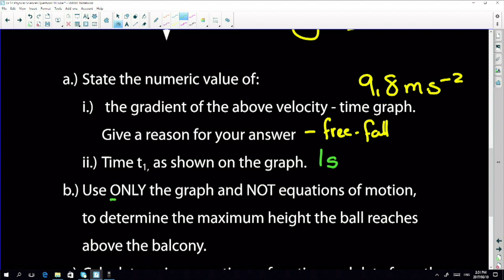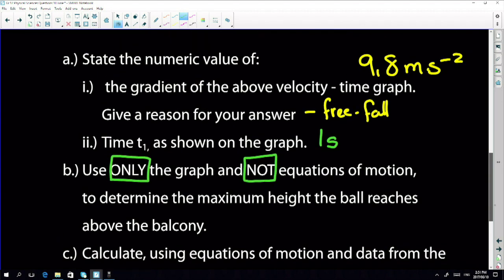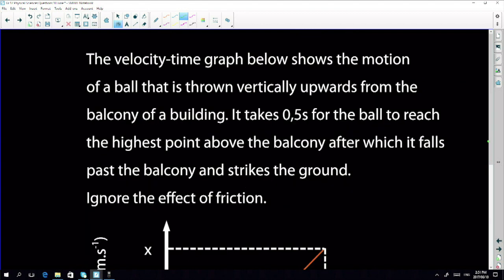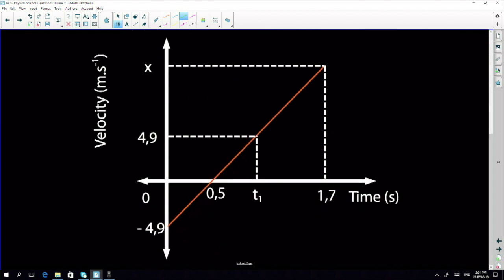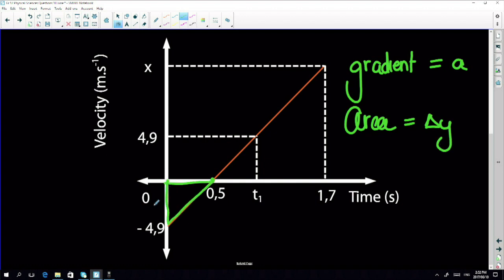Use only the graph and not equations of motion to determine the maximum height the ball reaches above the balcony. I cannot use equations of motion. Brilliant, I have to use the graph. Gradient of the graph gives me acceleration, area gives me displacement. That means I need to calculate that area.